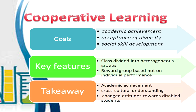The goals of cooperative learning are academic achievement of the child, acceptance of diversity as the groups are heterogeneous, and development of social skills. The key features are that the class is divided into heterogeneous groups and the reward is based on group performance, not individual performance, ensuring each and every child participates. The takeaways are academic achievement, cross-cultural understanding, and a changed attitude towards disabled students, since the group gets a reward only when each individual contributes.